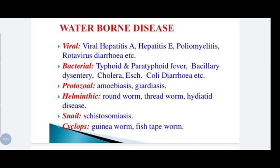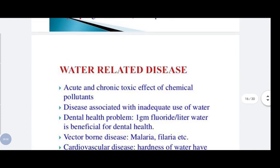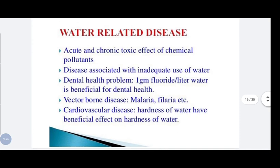Helminthic waterborne diseases include roundworm disease, threadworm disease, and hydatid disease — where cyst or mole formation occurs. Snails cause schistosomiasis. Cyclops causes Guinea worm disease and fish tapeworm disease. Certain other related diseases include acute and chronic toxic effects of chemical pollutants.